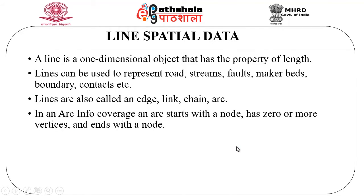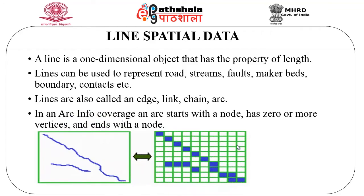The next one is a line spatial data. A line is usually called a one-dimensional object that has the property of length. Lines can be used to represent roads, streams, falls, boundaries, and contacts. Lines are also called edges, links, chains, or arcs. In an arc information coverage, an arc starts with a node, has zero or more vertices, and ends with a particular node. Here we can see a continuous line which flows from one source node to the destination node, also represented in a grid or matrix format.